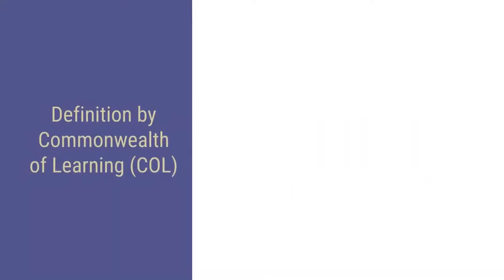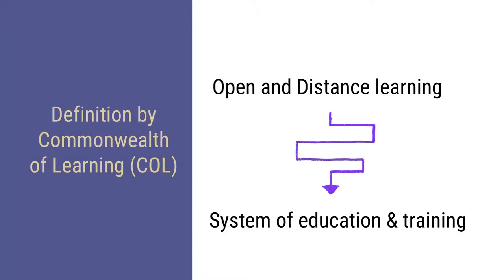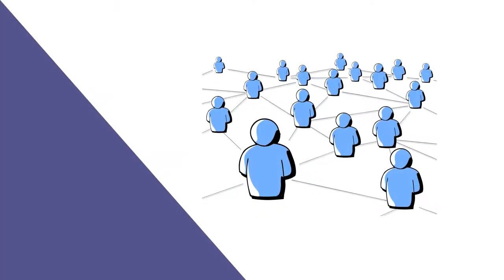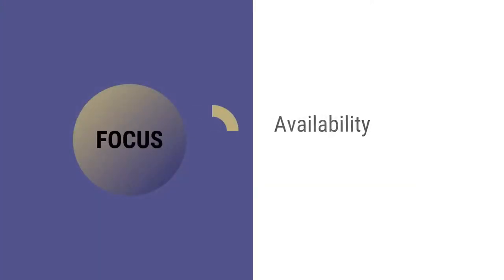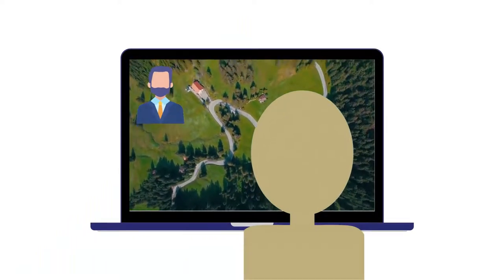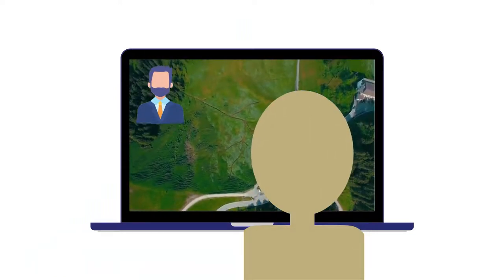There are many definitions of ODL, but for an introduction we shall take a look at the Commonwealth of Learning's definition of ODL. COL defines open and distance learning as a system of education and training that puts onus on the learning resources rather than classroom sessions as the central feature of learning experience. This means that the ODL system is decentralizing learning from the traditional classroom setup. The focus point is the availability and the quality of the learning material. This mode of education disposes traditional classroom setup and uses technology to facilitate interactions between teachers and learners. In the modern day, most of the interactions happen on the digital platform.